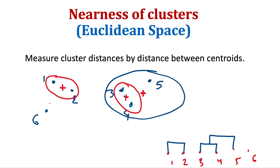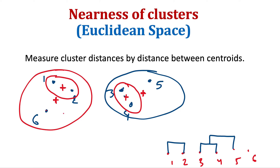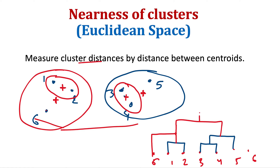We are left with three clusters: the merged cluster of one, two, three, four, five, and point six. We see that the cluster of one and two is nearest to six, so we merge them, and eventually we end up with one final cluster. The diagram on the right showing this process is called a dendrogram, and we use it extensively in hierarchical clustering to understand the concepts.